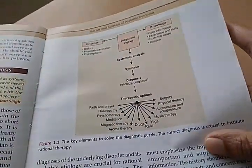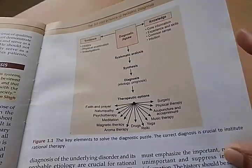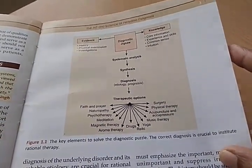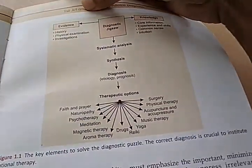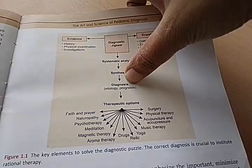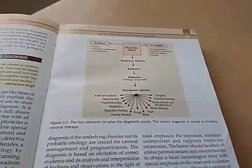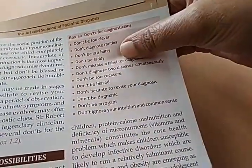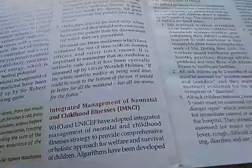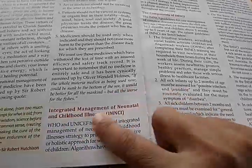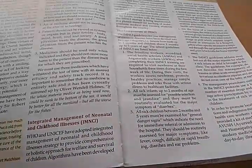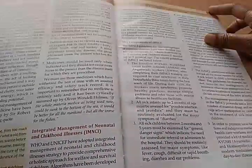The key elements to solve the diagnostic puzzle: the correct diagnosis is crucial to institute rational therapy. They look at evidence, diagnostic jigsaw, knowledge, systematic analysis, and synthesis. The book also advises don't be too clever, don't be in a hurry, don't be arrogant. There's also a little of PSM here — Integrated Management of Neonatal and Childhood Illnesses (IMNCI).